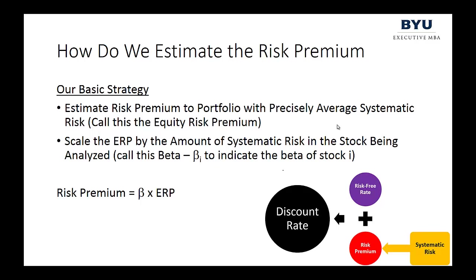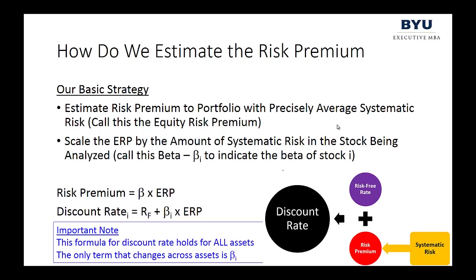We define the risk premium as beta times the equity risk premium. The equity risk premium is the expected return above the risk-free rate to a portfolio with precisely average systematic risk. Beta is the amount of systematic risk in the specific stock. Therefore, the discount rate for common stock is the risk-free rate plus beta times the equity risk premium. The only thing that changes when moving across assets like Nike versus Delta Airlines is the beta — the risk-free rate and equity risk premium stay the same.